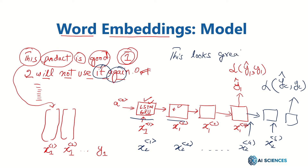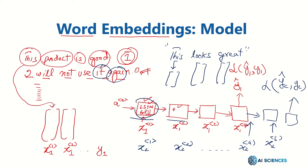That's the review for which we want to find out whether it's positive or negative. After training, we convert each word to an embedding — convert this to an embedding, convert this to an embedding, convert this to an embedding.